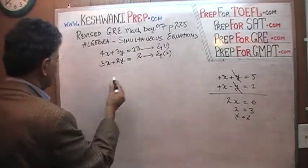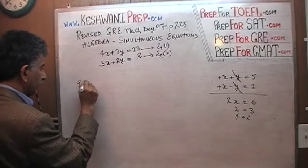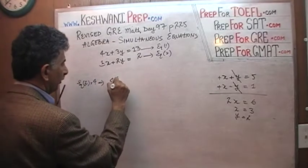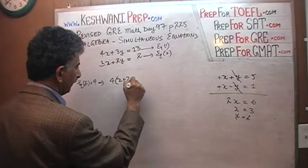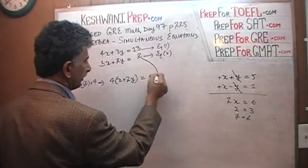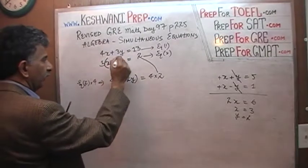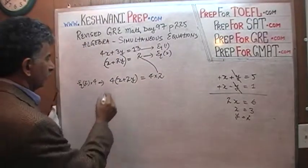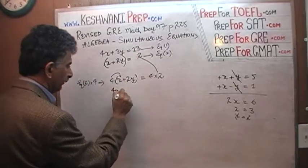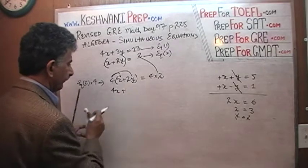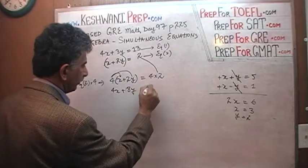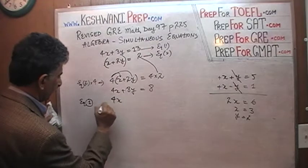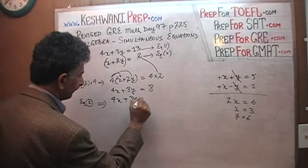We are going to take equation number 2 and multiply it by 4. Equation number 2 multiplied by 4 gives us 4 times x plus 2y, which equals 4 times 2. So now we have 4x plus 8y equals 8. And now we add to it equation number 1, which says 4x plus 3y equals 13.